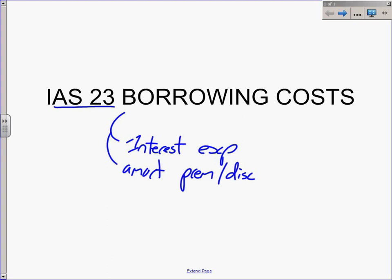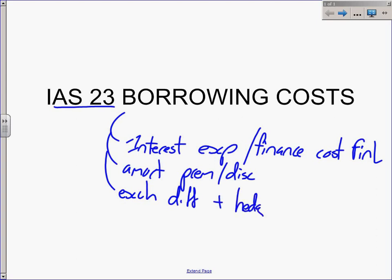You could have your finance costs in terms of a financial liability, you could have exchange differences, and you could have hedging costs that all come in underneath borrowing costs.